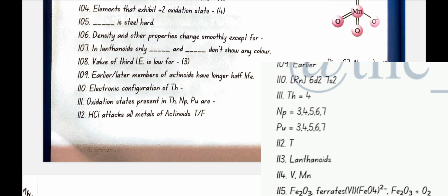Electronic configuration of Th is Rn 6d2 7s2. Oxidation state present in Th, Np, Pu: in Th it is 4, in Np it is 3 4 5 6 7, in Pu it is 3 4 5 6. HCl attacks all metals of actinoids. Yes true.